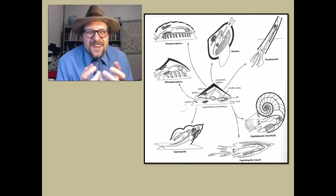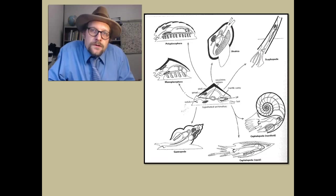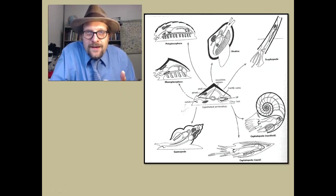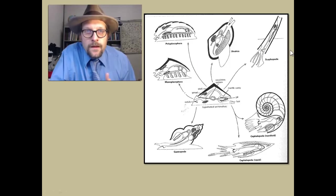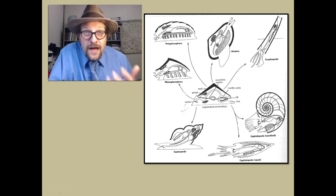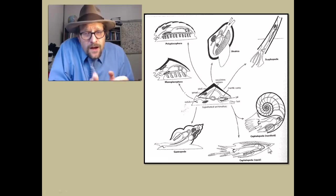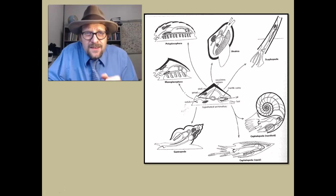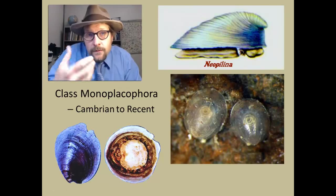From this primitive body plan, we can envision ways in which the various groups of molluscs arose. The shells could become segmented, like in chitons. It could become paired like in Bivalvia, or elongated into tubes like the Scaphopoda. It could become coiled, such as in gastropods and cephalopods, such as nautiloids. Or it could even become internal, like in squids. Note that the shell can also be lost in many groups, like slugs. Now let's look at each of these classes within the phylum Mollusca.